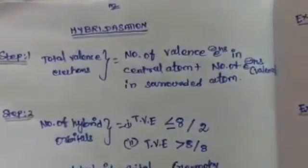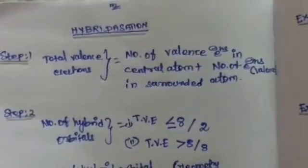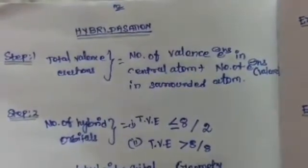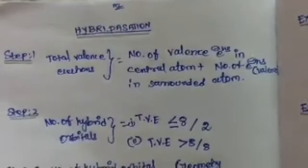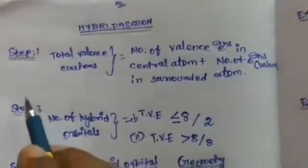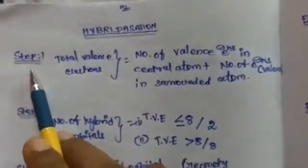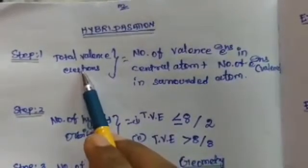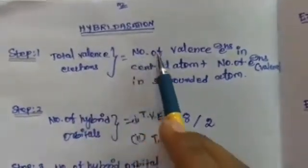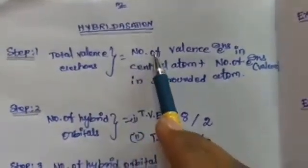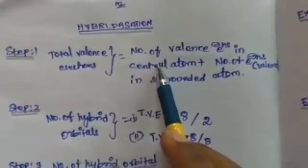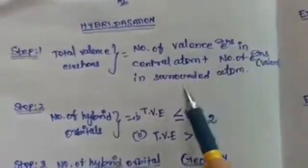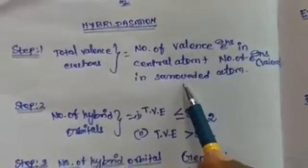Hello students, today we will discuss how to find hybridization in a few easy steps. Step 1: find the total valence electrons, which equals the number of valence electrons in the central atom plus the number of valence electrons in the surrounding atoms.